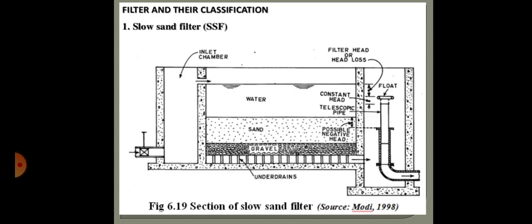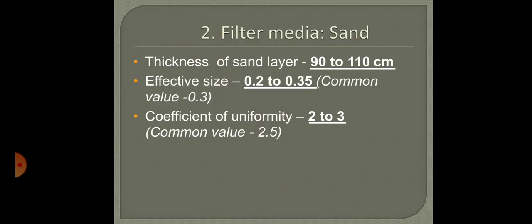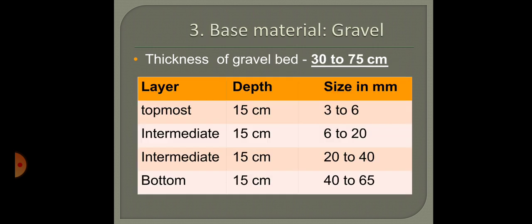For the filter media, we normally use sand. The depth or thickness of the sand media is kept between 90 to 110 centimeters. The effective size of the sand varies from 0.2 to 0.35 mm, and the coefficient of uniformity is between 2 to 3.